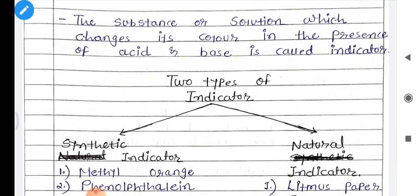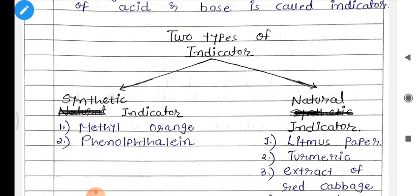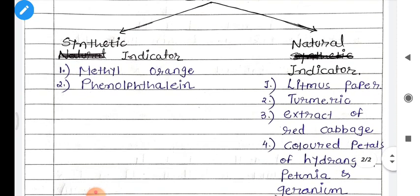There are two general types of indicators that exist in nature. First is synthetic indicator. Second is natural indicator. The synthetic indicator includes methyl orange and phenolphthalein. Phenolphthalein remains colorless in the presence of acid, while in the presence of base it turns into pink color. Natural indicators include litmus paper, which is a very basic and fundamental natural indicator used to identify whether a substance is acidic or basic.